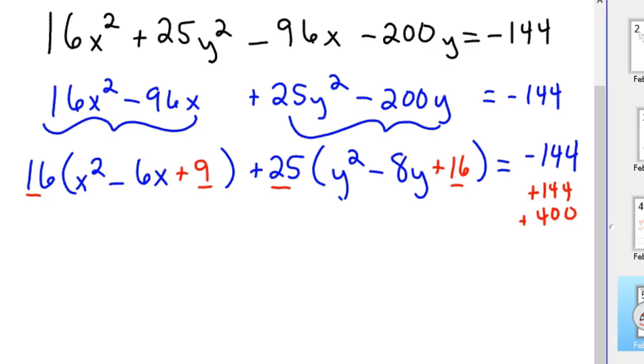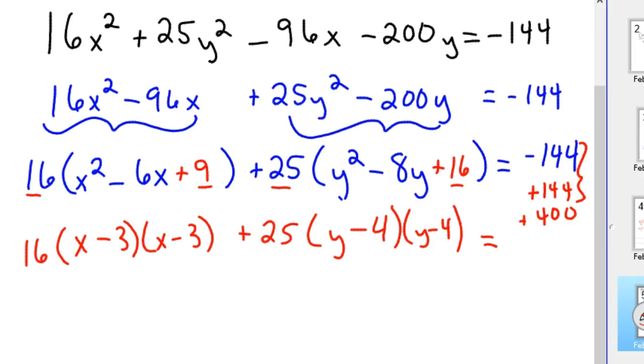So now you go ahead and factor these. So this is 16(x-3)(x-3) + 25. This factors, you could probably skip this step if you're really good at factoring. (y-4)(y-4), whoops, not y, minus 2. And then it equals, well, -144 and 144 are 0, so it would just equal 400.